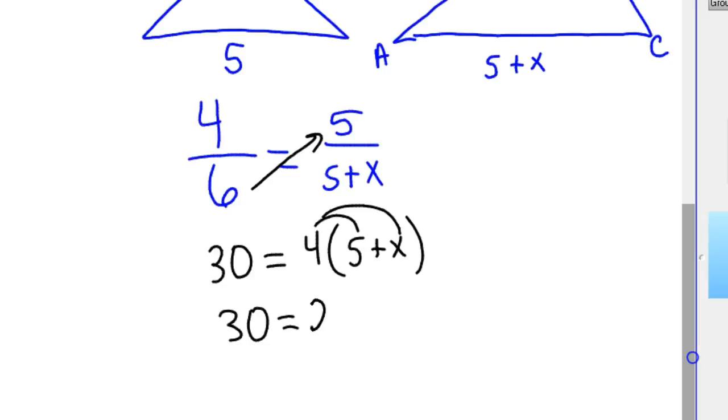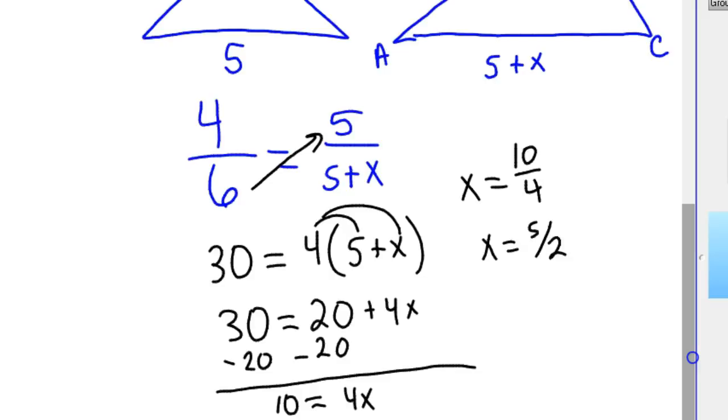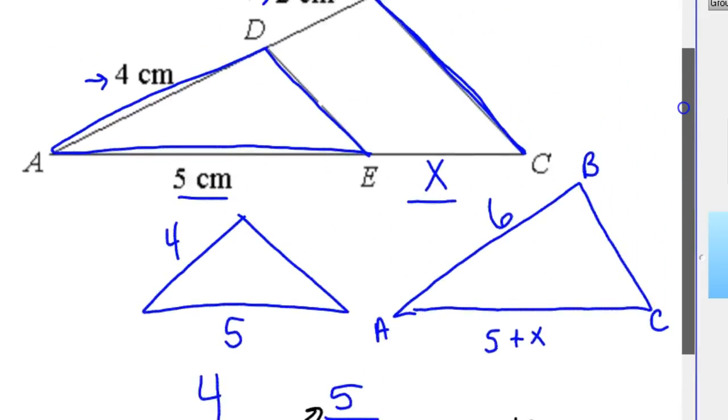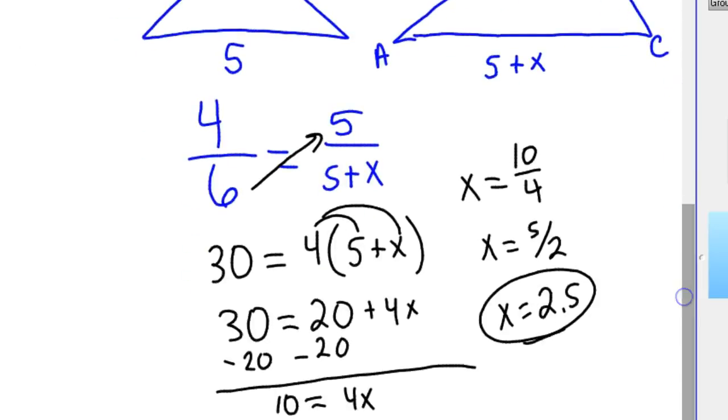But anyway, you've got 30 equals 4 times, you distribute that through. So that's 20 plus 4x. You subtract your 20. And so 10 equals 4x. So x equals 10 divided by 4. X equals 5 divided by 2. So x equals 2.5. And there you have it. So that's the length of EC. It's 2 and a half.